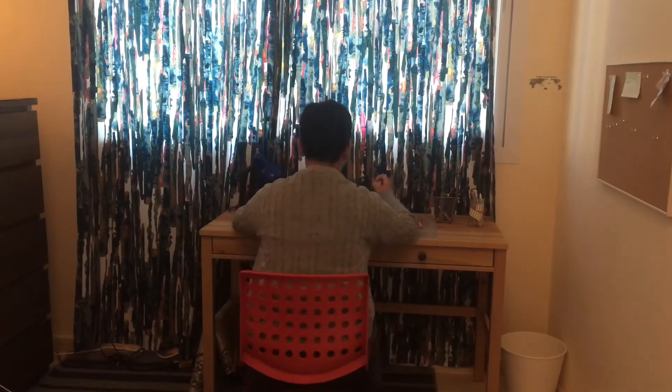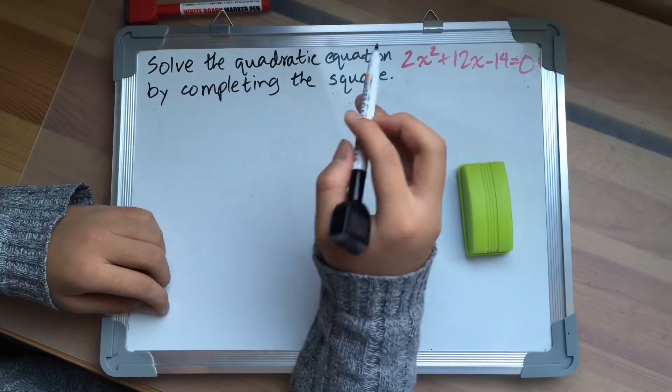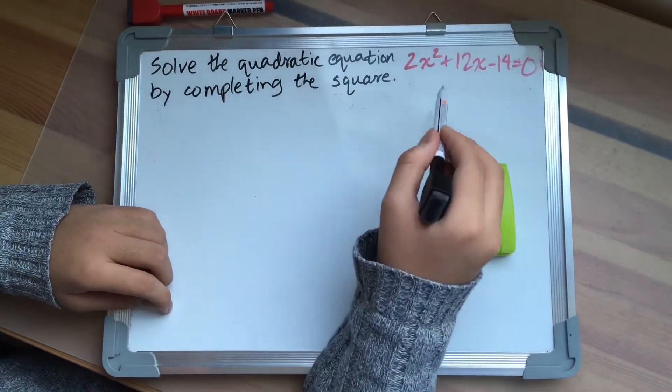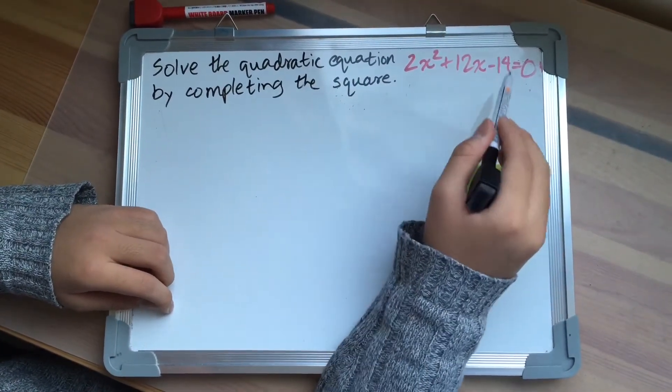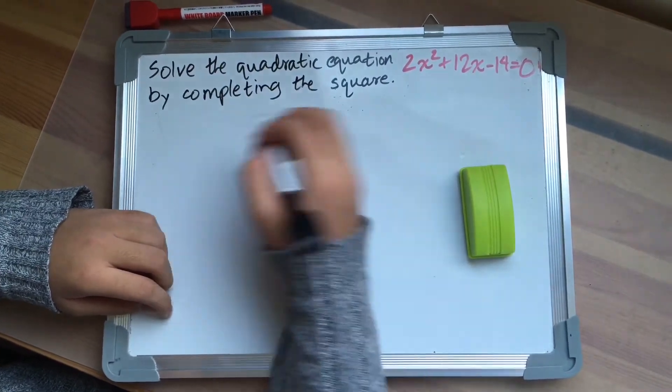Today's question is: Solve the quadratic equation 2x squared plus 12x minus 14 equals 0 by completing the square.